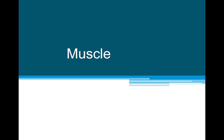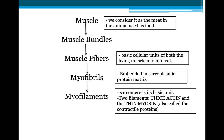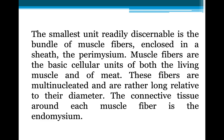What is the structure of meat? Muscles consist of a number of muscle bundles. These muscle bundles are formed by muscle fibers, the basic cellular unit of both the living muscle and of the meat. This muscle fiber is made of myofibrils embedded in a sarcoplasmic protein matrix. These myofibrils are formed from myofilaments, which consist of two types of filaments: thick actin and thin myosin, which are called the contractile proteins. The smallest unit readily discernible is the bundle of muscle fibers enclosed in a sheath, the perimysium.